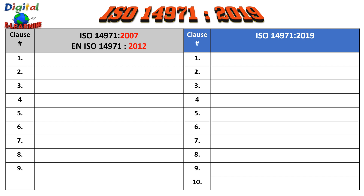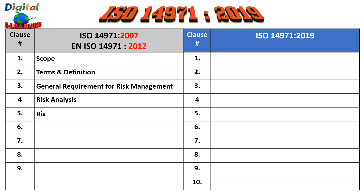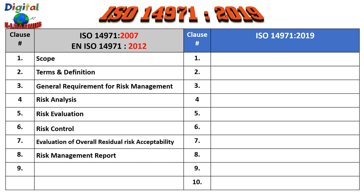Looking at the clauses from the previous revision: scope, terms and definitions, general requirements for risk management, risk analysis, risk evaluation, risk control, evaluation of overall residual risk acceptability, risk management report, and production and post-production information. This is the structure according to the previous revision.